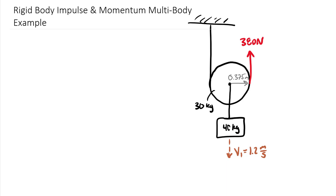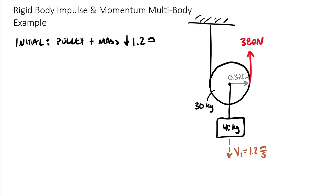Keep in mind that the pulley is technically in general plane motion — it is rotating as well as translating initially downwards. The block is going to be in pure translation, so we'll only have linear momentum. I'm going to break this up into initial, during, and after. The 'after' is going to be the unknown. Initial conditions are that the pulley plus the mass are going downwards at 1.2 meters per second.